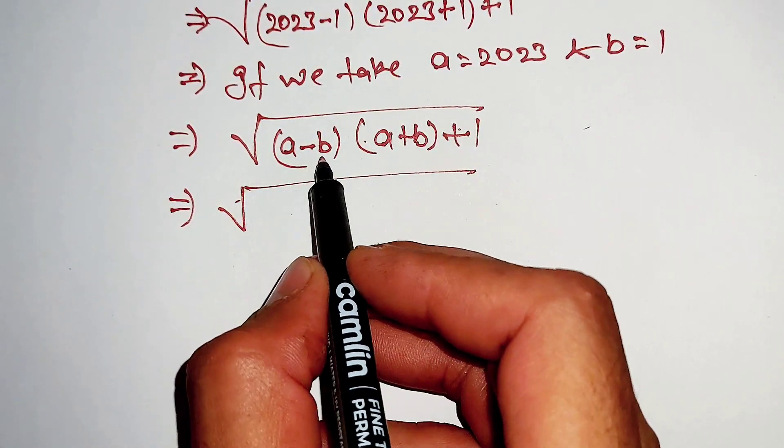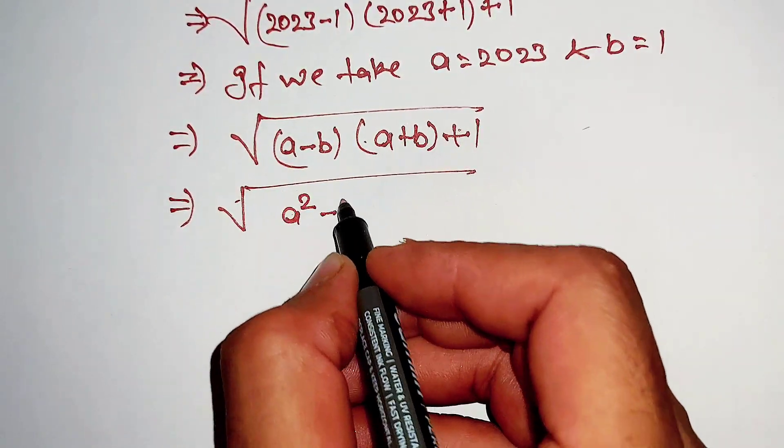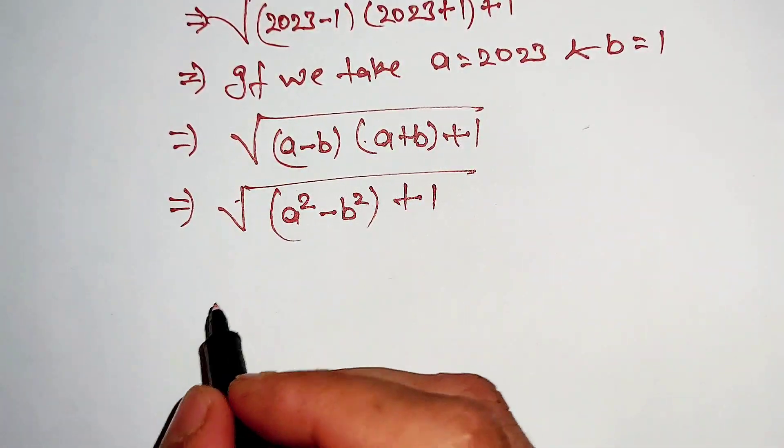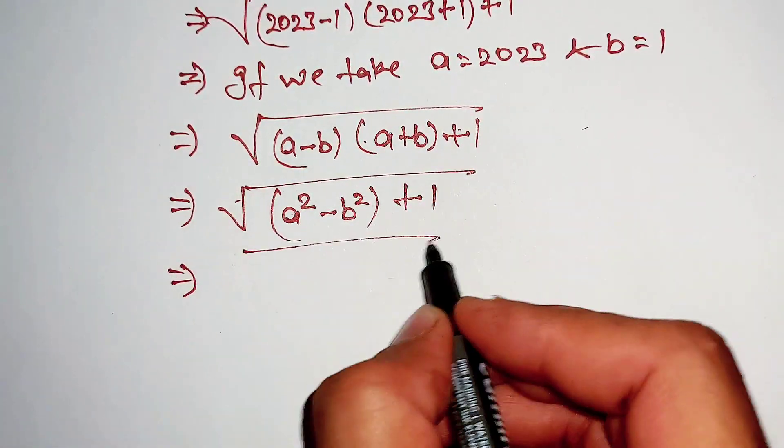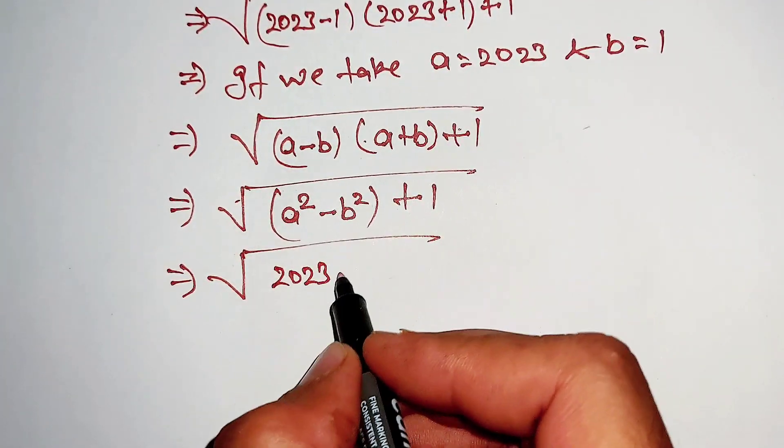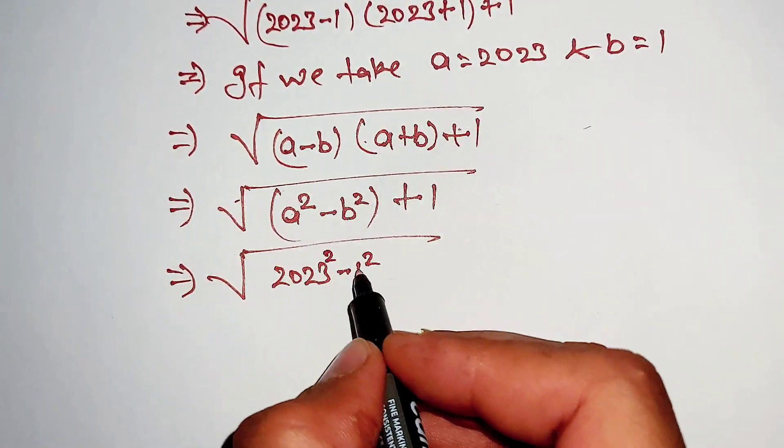Now a minus b and a plus b is equal to a square minus b square, and same plus 1. The a value is 2023 and b value is 1, both square.